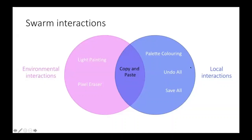With local interactions: in palette coloring mode, the human uses a dedicated robot — the brush — to send messages to robots to change their LED color. Whenever the brush is within communication range of robots on the robotic canvas, they change their color. In undo all mode, the human uses the undo robot, and whenever robots are within communication range of it, they change their LED color to red for one second.